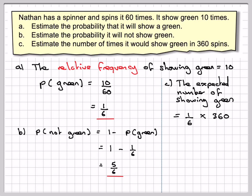360 divided by 6. Well, 6 goes into 6, 1 and into 36, 6. So we've got 1 times 60 on the top. So we've got a final answer here of 60 times.